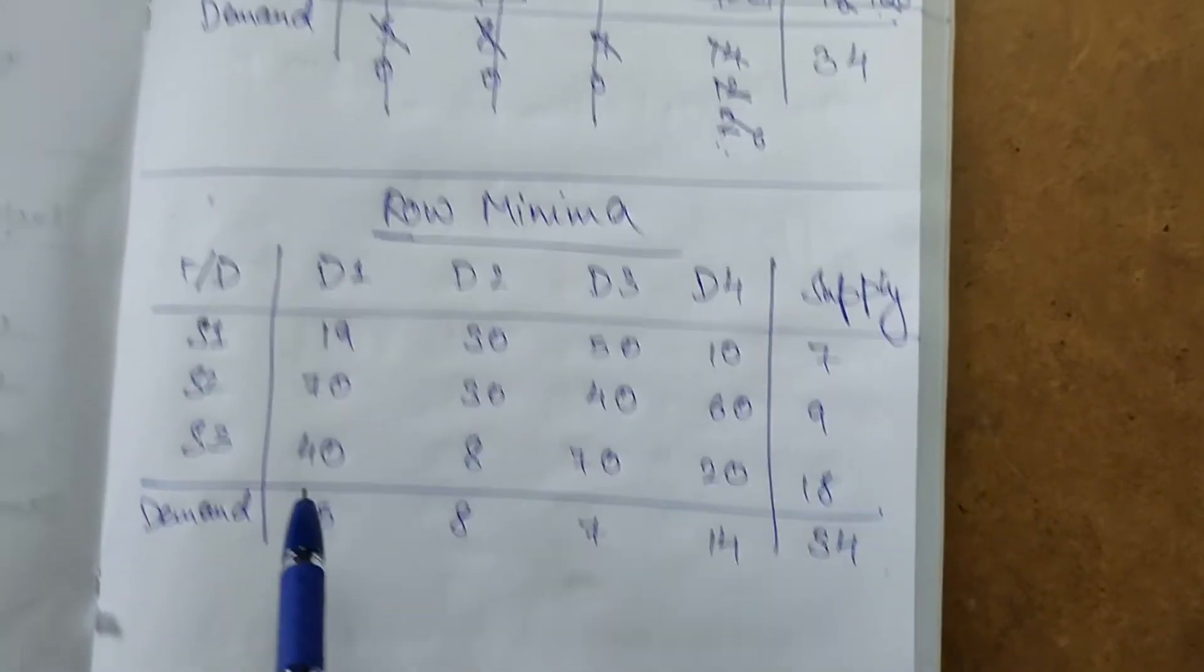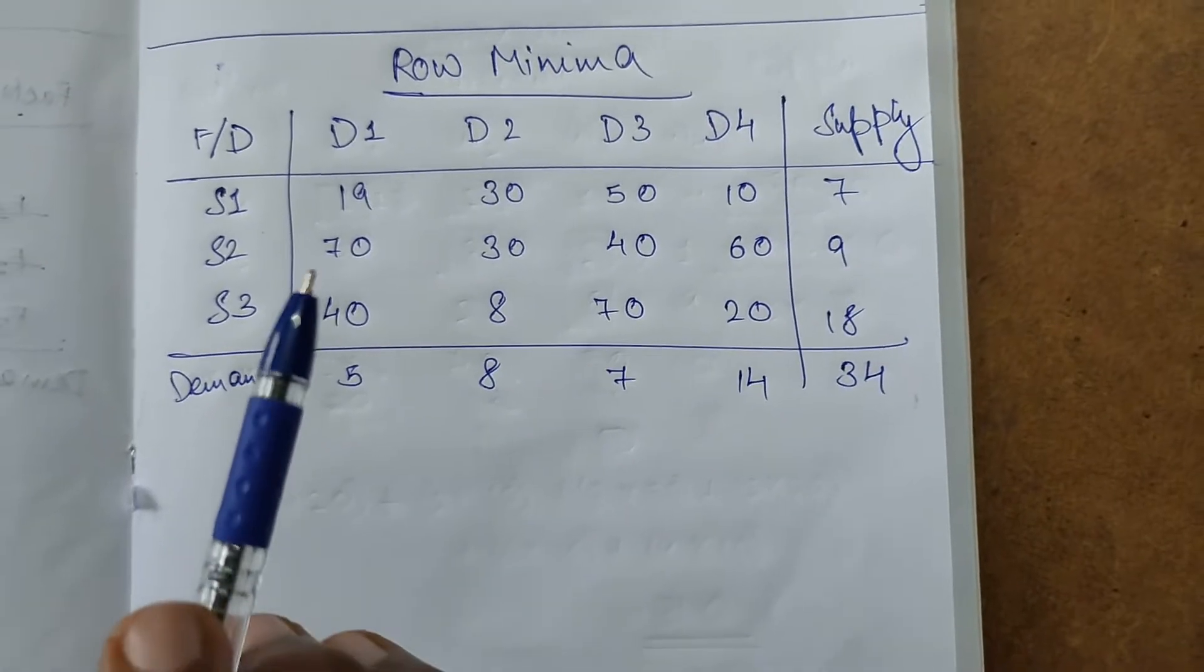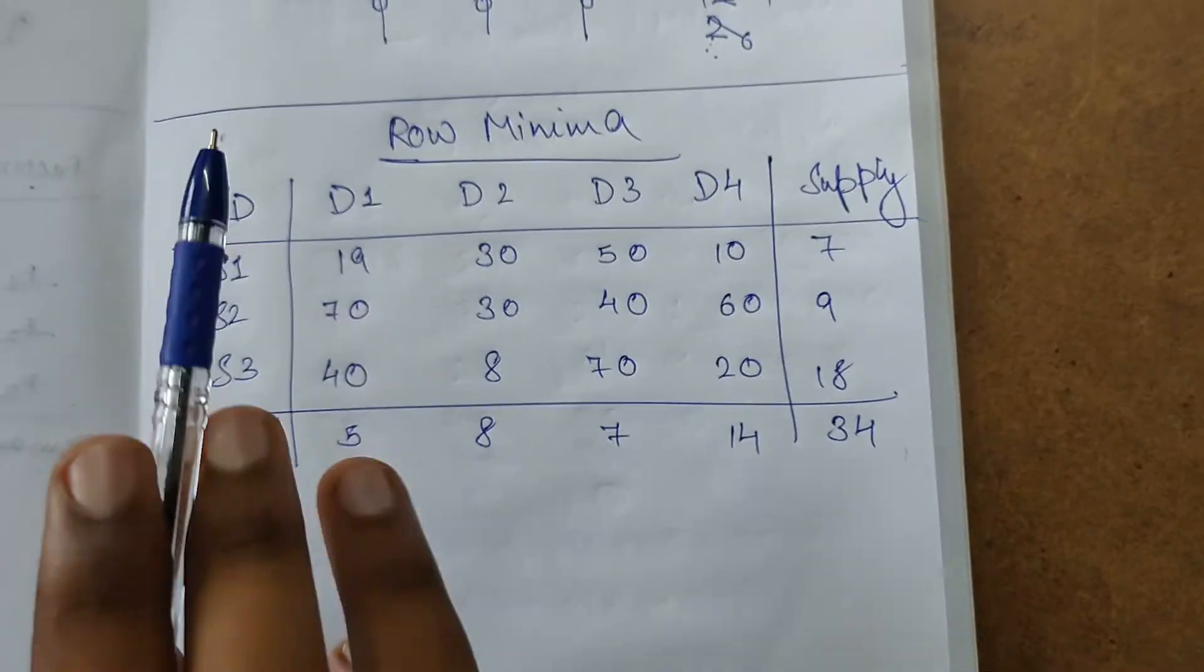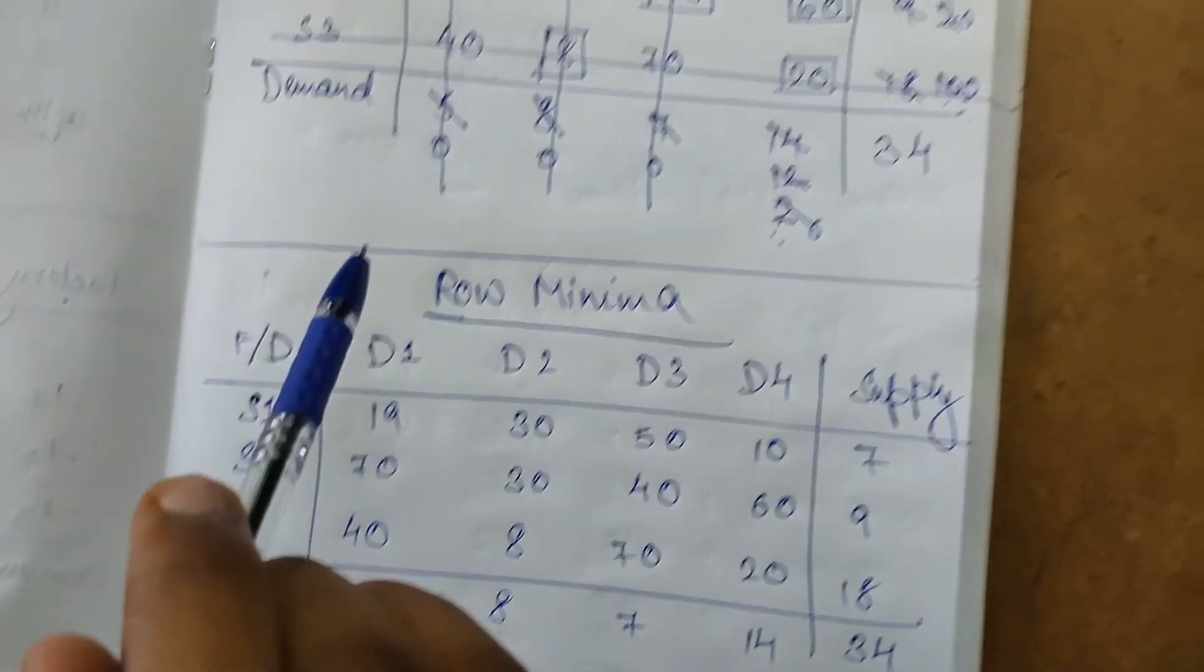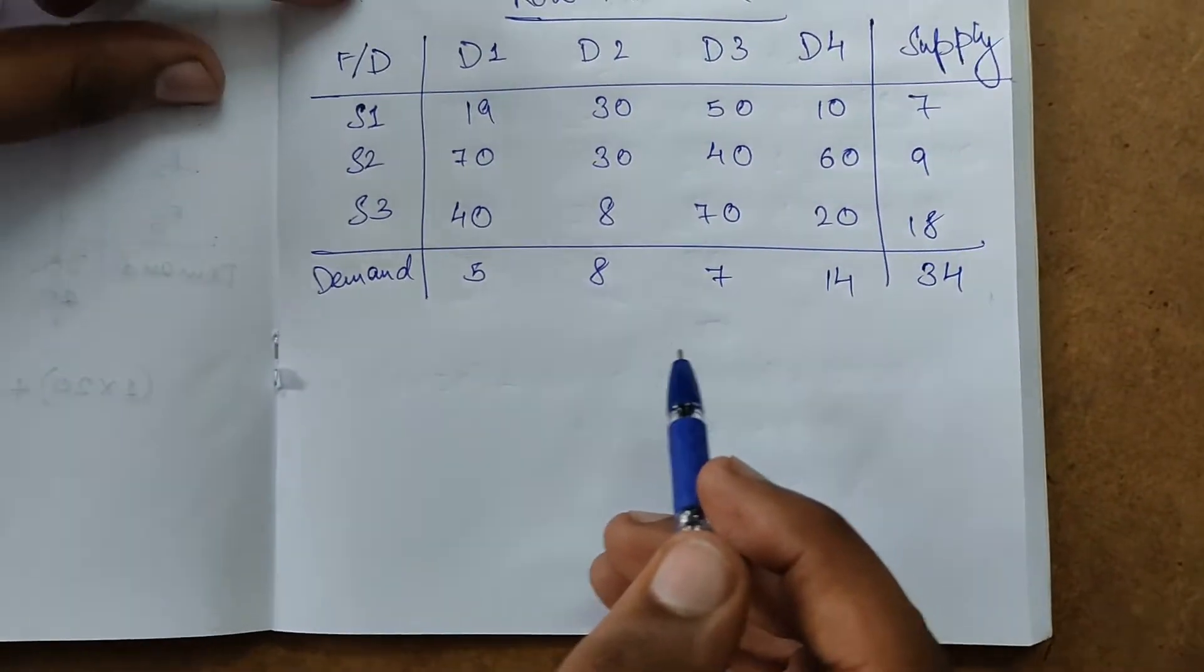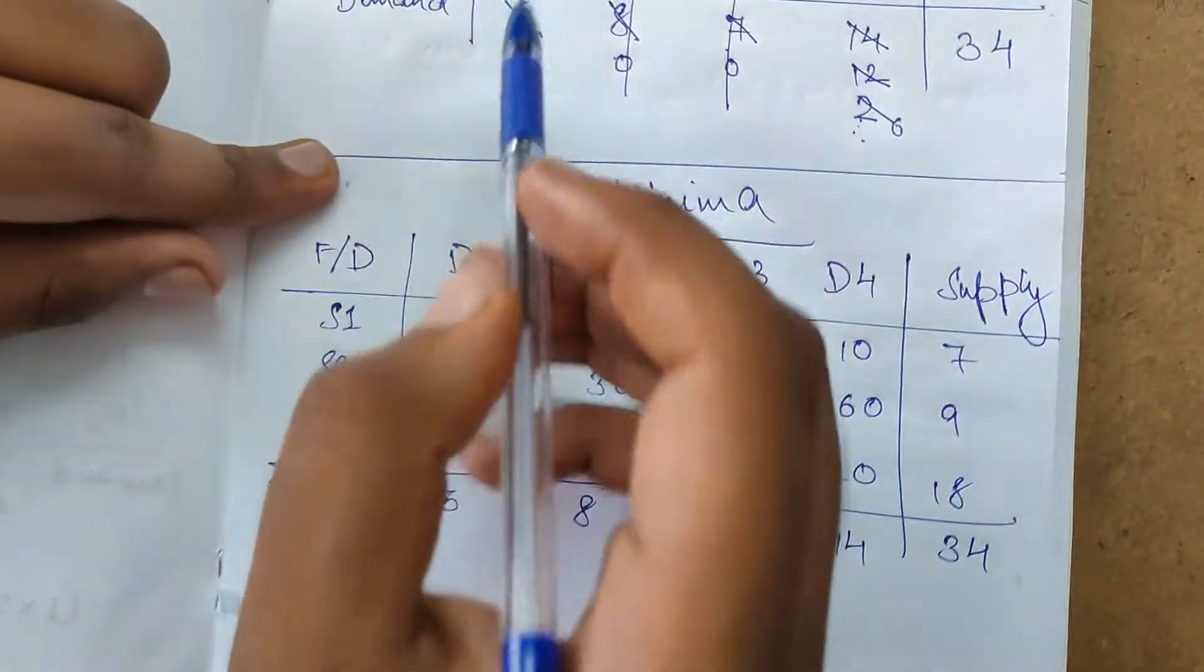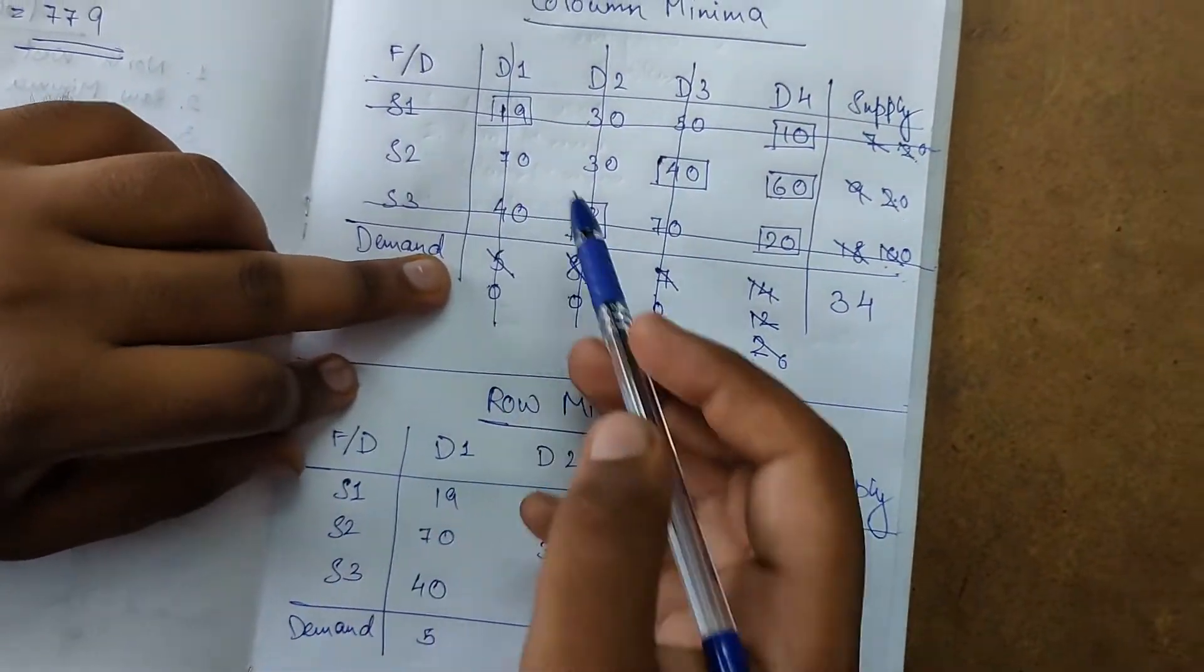Same problem, row minima applied to show that rows give different answers and column minima gives different answers. We iterated through the columns and checked the least element.